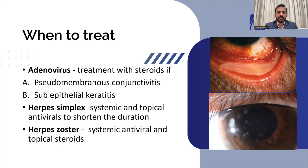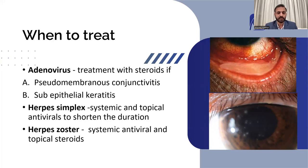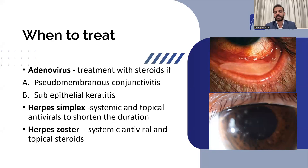In herpes simplex, you need to use systemic and topical antivirals. Medications like acyclovir and ganciclovir are very effective and will cut short the duration of conjunctivitis. In herpes zoster, whenever you see dermatological involvement, you need to use systemic antiviral tablets to control dermatological manifestations. However, the ocular manifestations are inflammatory in nature, not infective. So if you use topical antiviral medications for herpes zoster, it will not achieve remission. Topical steroids and systemic antivirals are the treatment for herpes zoster — slightly different from herpes simplex.